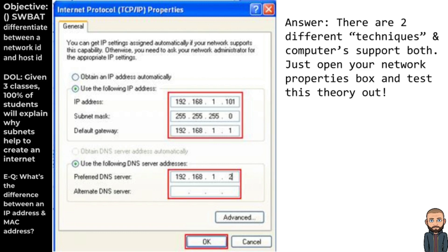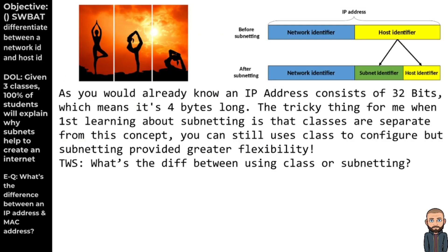Subnetting is just one of the techniques for assigning a subnet mask. The other technique — in the olden days the only technique — was classful addressing. So how do you create a network ID? There are two techniques. Whether you're doing classful addressing by typing in the number using only classes, or you do subnetting, you can use either technique to get yourself a network ID. What's the difference between using class or subnetting to create a range of IP addresses?